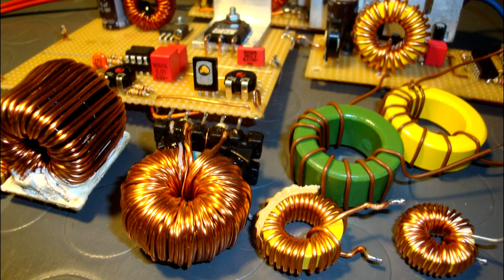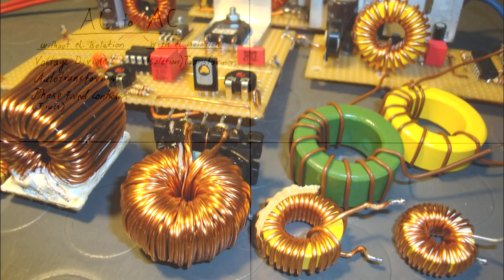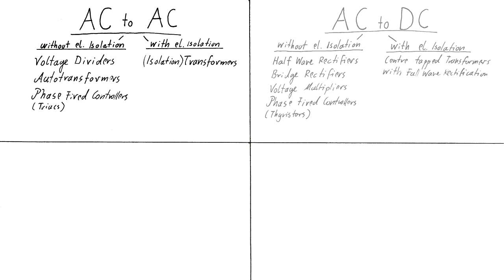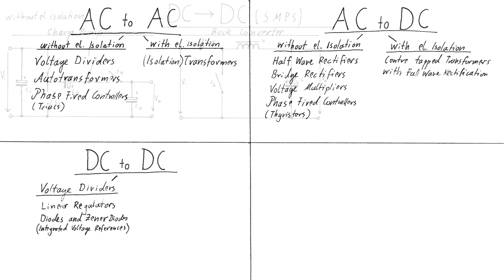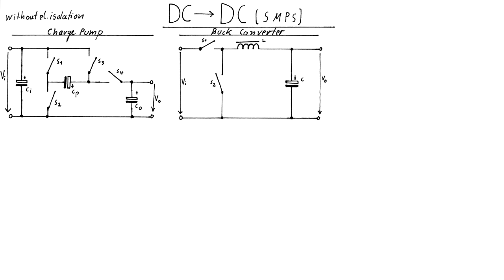Hello, this is part 4 of my video tutorial series about switched mode power supplies. After talking about non-switching AC to AC, AC to DC and DC to DC conversion techniques in parts 1 and 2, I dealt with the principal operation of the first two switching topologies, namely the charge pump and the buck converter in part 3.